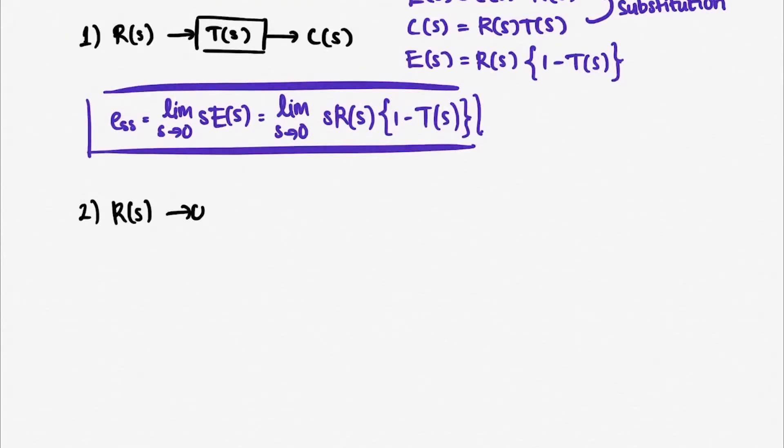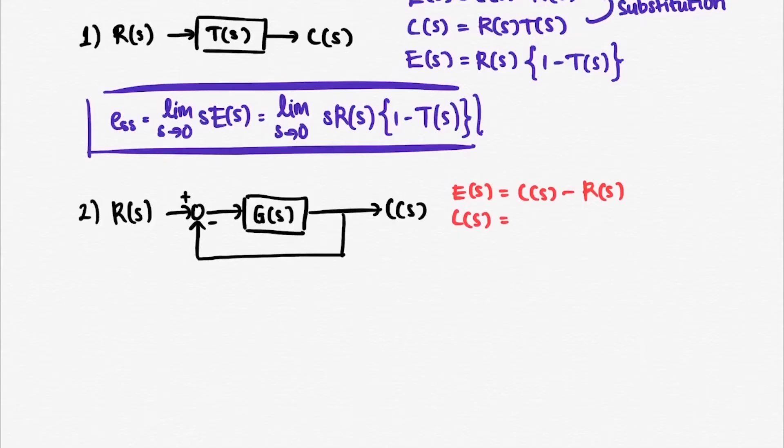We can do the same thing for the second form, the negative unity feedback system. We know that e of s is equal to R of s minus C of s, and C of s is equal to E of s times G of s.